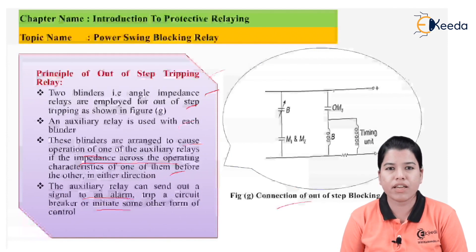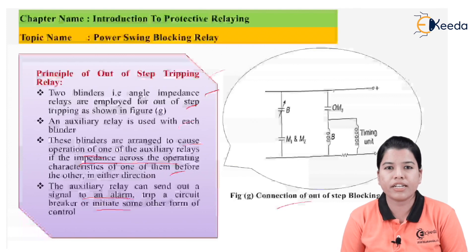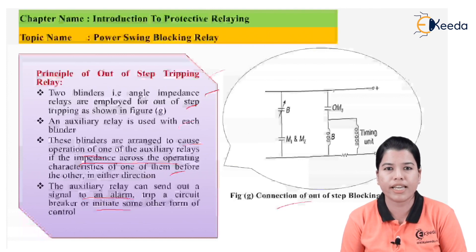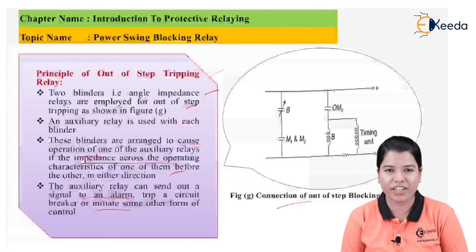In this way we have studied the power swing blocking relay. Basically, when the generators lose synchronism the rotor angle changes, causing power swings. In order to block these power swings, a power swing blocking relay is used. Thank you friends for watching this video — stay tuned with Ekeeda and do subscribe to our channel.